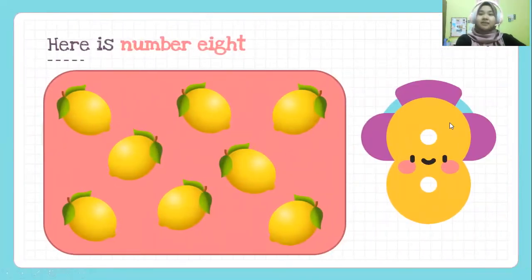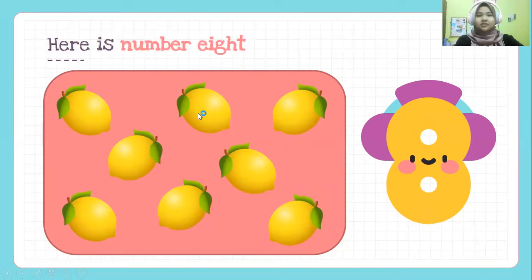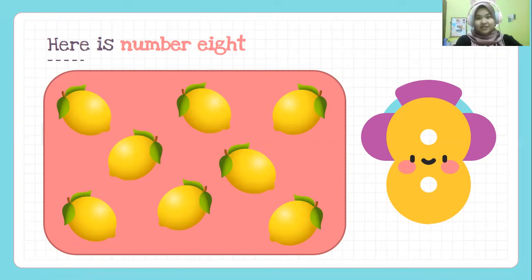Next, here is number eight. Number eight. Let's see. How many lemons are there? One, two, three, four, five, six, seven, eight. That's right. Eight lemons represent number eight.